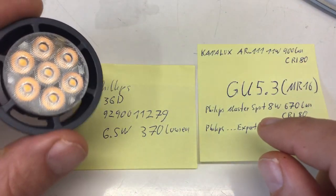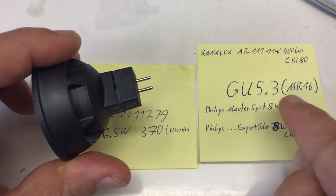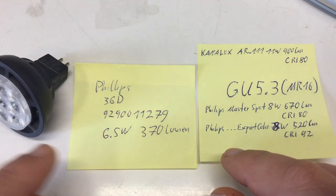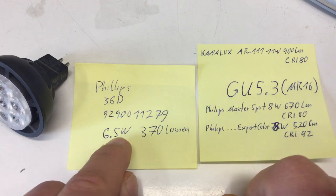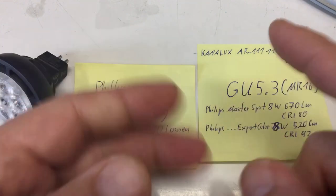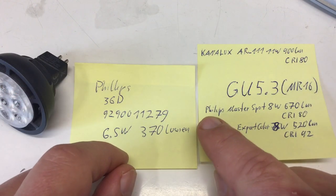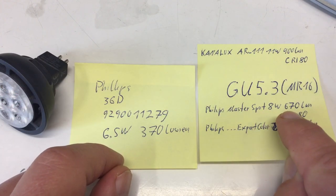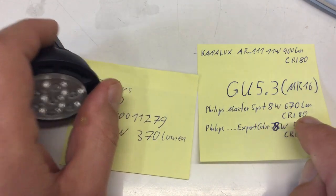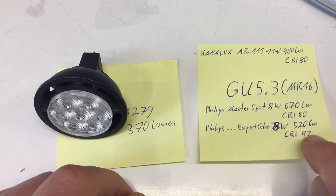After some googling, I found these light bulbs. And by the way, these are GU 5.3, also called MR16 sockets. Anyway, these are Philips Master Spots 6.5 watt warm white, 370 lumens. You can also get them in cold white, but not in daylight white. They are also available in 8 watts with 670 lumens. But they all have just a color rendering index of 80.